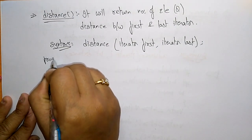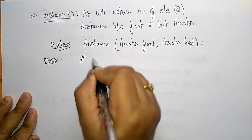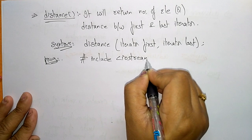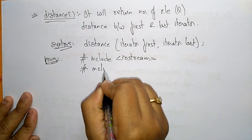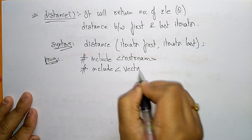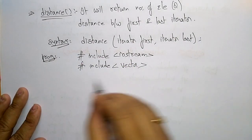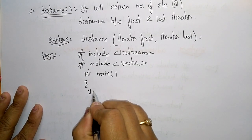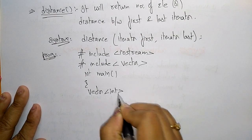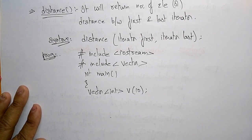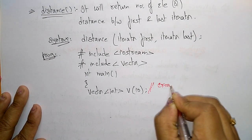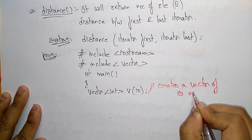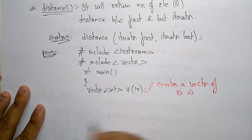Let me write the program using this distance function. We include iostream and the vector header. The vector library contains all these operation functions. In the main program, first declare the vector: int v of 10. v of 10 creates a vector of 10 zeros.